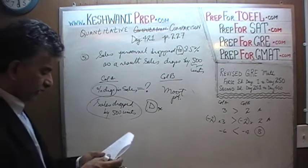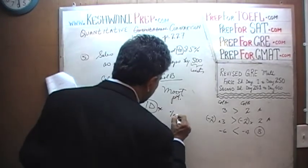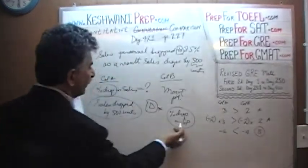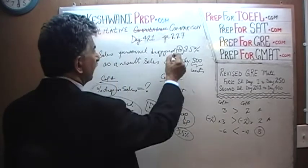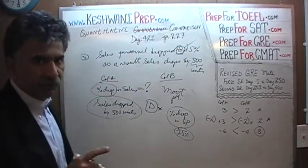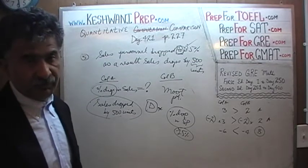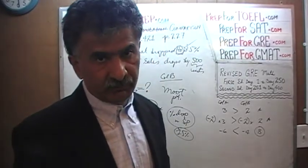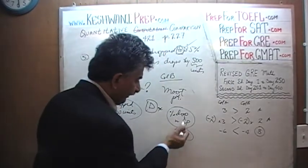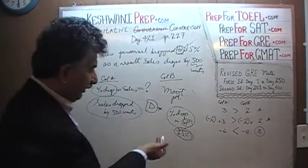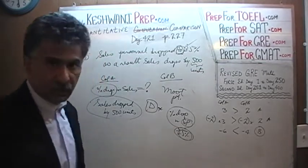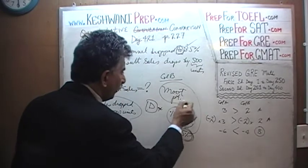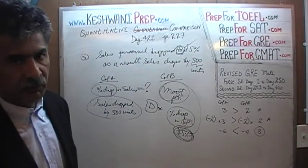Just to satisfy your curiosity: column B asked for the percentage drop in sales personnel. Since personnel dropped to 85%, the percentage drop was 15%. But that figure is a moot point — we have nothing in column A to compare it against, since the percentage drop in sales cannot be determined. That exercise is futile and has no practical implication whatsoever.